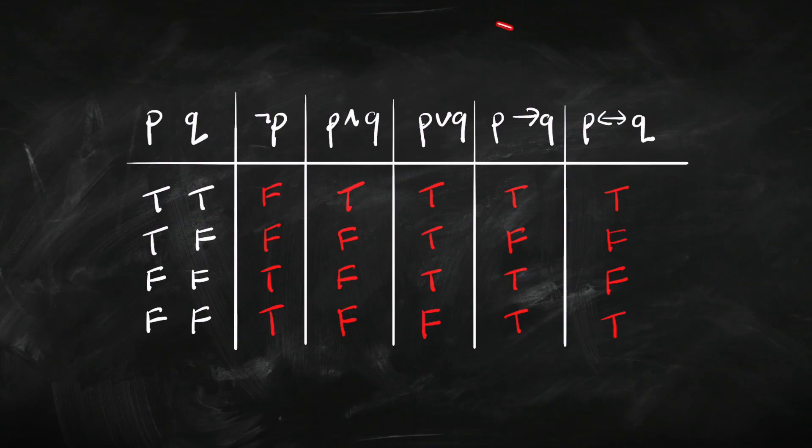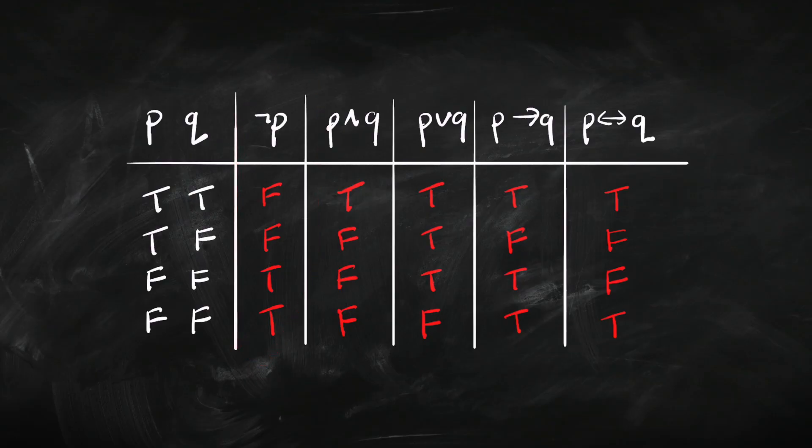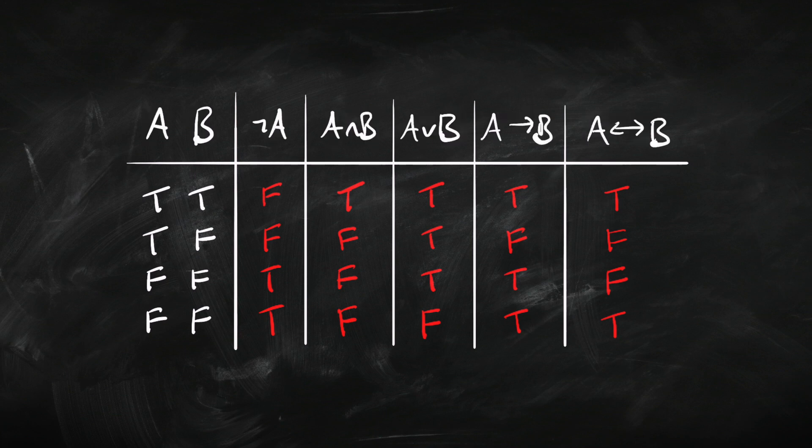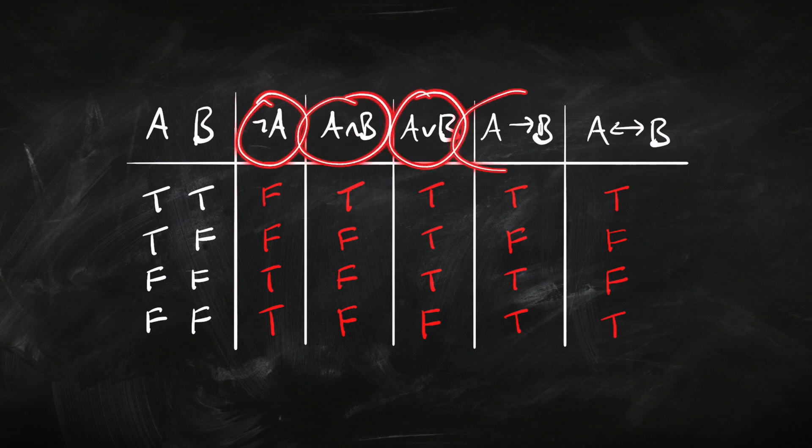So there we have five basic truth tables, one for each connective, and we can summarise them by putting them all into one table: one for not-P, one for P-and-Q, one for P-or-Q, one for 'if P then Q', and one for 'P if and only if Q'. This works for any sentence — any sentence whose main connective is a negation will have a truth table that works like the not table. So we can present this in terms of complex sentences A and B: if we've already worked out the truth value of A and B, we can then extend that to not-A, A-and-B, A-or-B, 'if A then B', and 'A if and only if B'.